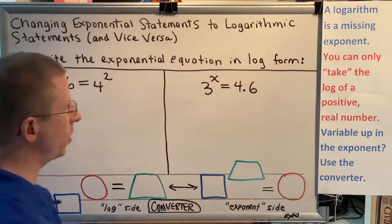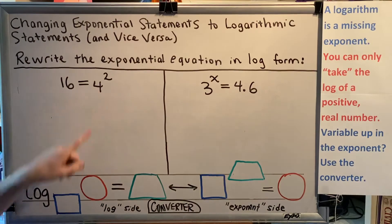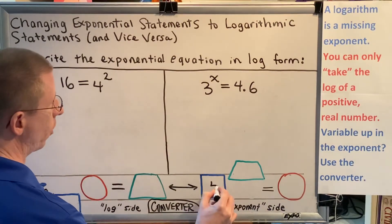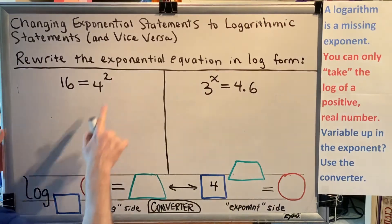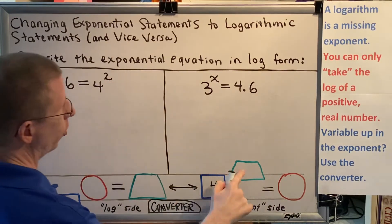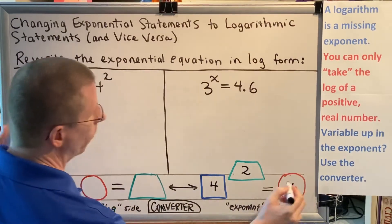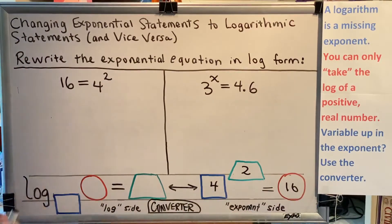The base is four, the blue box is for the base, so the four goes in the blue box. The exponent is two, so that goes in the green trapezoid. And the argument is 16, so that goes in the red circle.